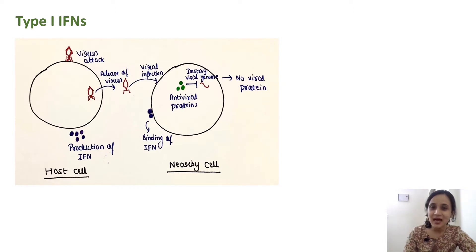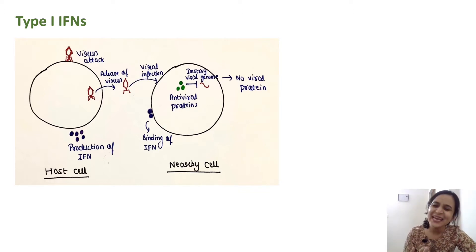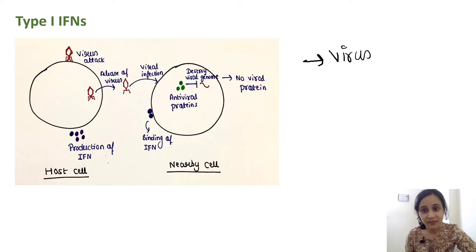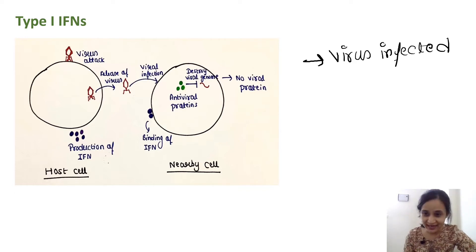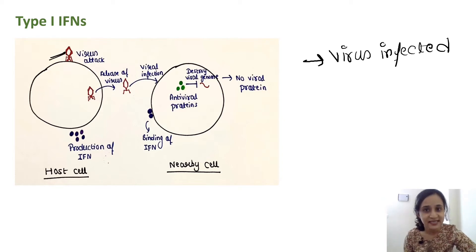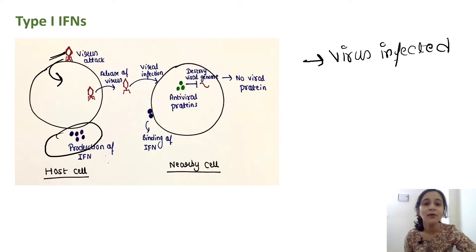I will discuss about Type 1 interferon first. Type 1 interferons are produced by any cell that is infected by a virus. Now we will see the mechanism. When a virus — suppose this is a virus — infects a cell, this virus is infecting this host cell. It induces the infected cell to produce interferons, so a number of interferons are now produced by this host cell.